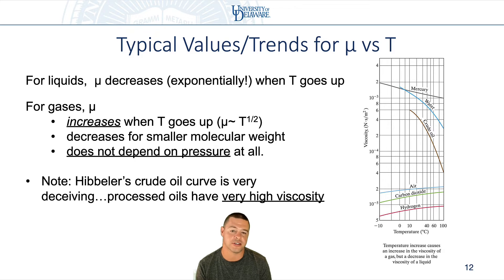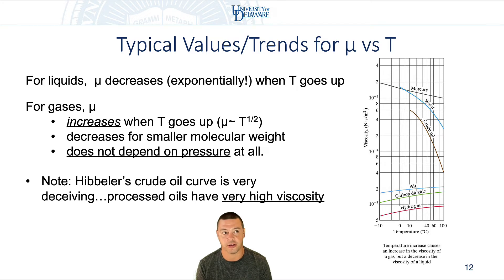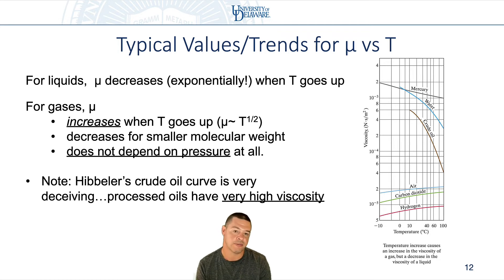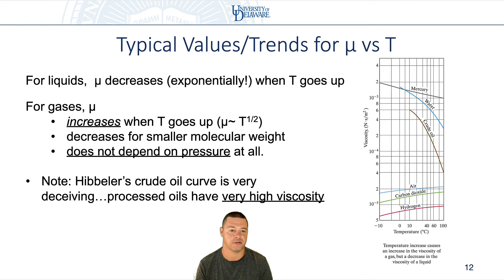Interestingly, viscosity does not depend on the pressure of a gas, basically up until the point where it's no longer an ideal gas. So for ideal gases, viscosity is independent of pressure — pulling a vacuum on a gas to try to make it less viscous won't work. The caveat is that if you pump out enough gas so that molecules hit the container walls more often than each other, that will eventually reduce viscosity, but you need a very high vacuum to achieve that.